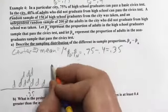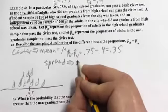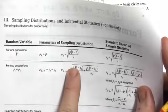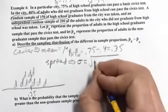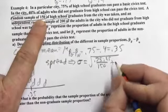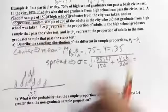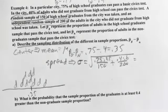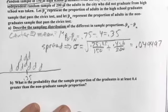For the spread, our standard deviation sigma equals the square root of (0.75 times 0.25 over 150) plus (0.4 times 0.6 over 200). Calculating that gives approximately 0.049497. So that is our standard deviation for this sampling distribution.